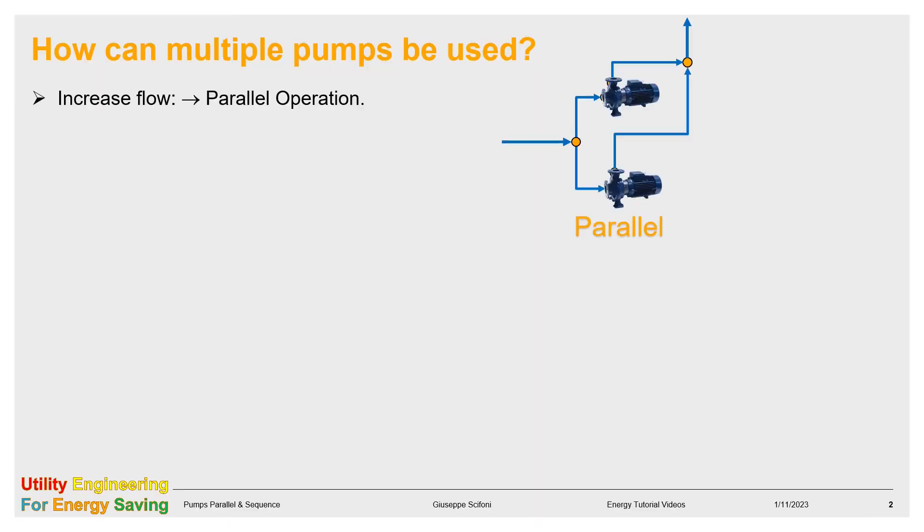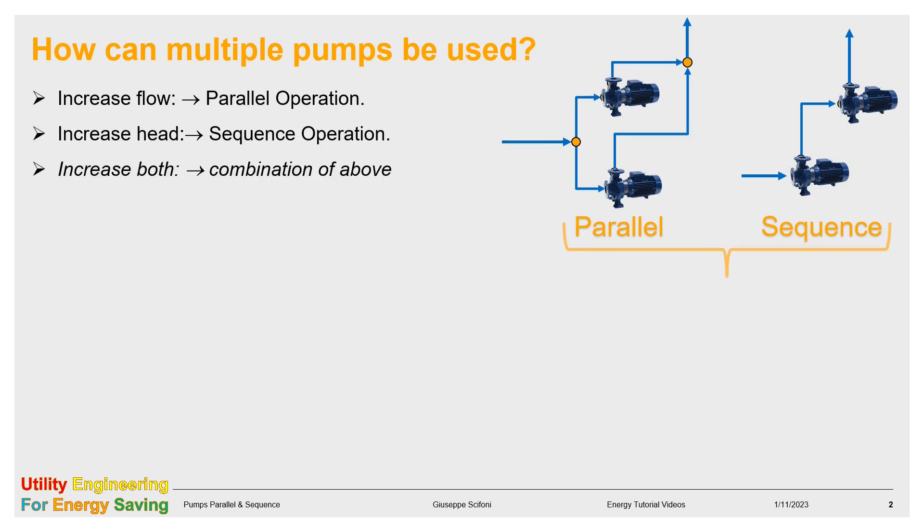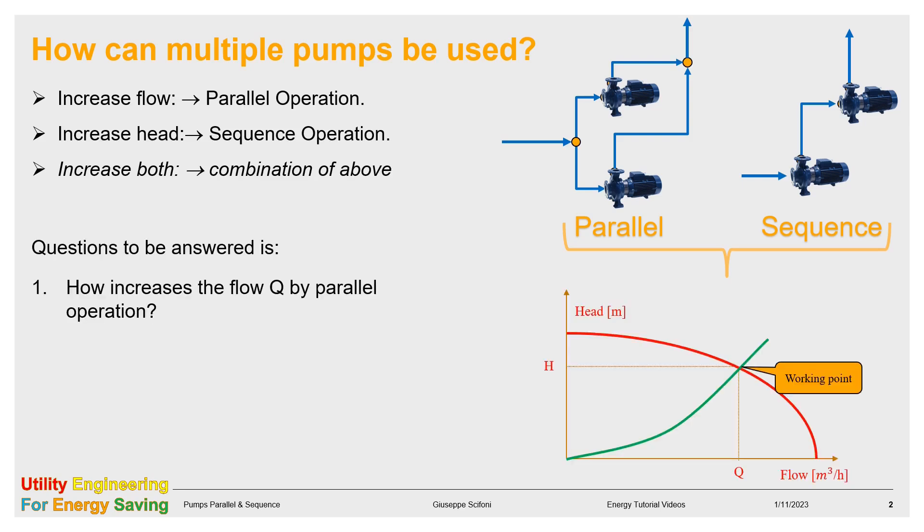The reason why multiple pumps are used is for increasing the supply capacity of the system. To increase the flow, the pumps must be in parallel. To increase the head, they must be in sequence. To increase both, we need a combination of above. In any case, the working point, defined by H and Q, is the intersection between the pump curve, the red one, and the load curve, the green one.